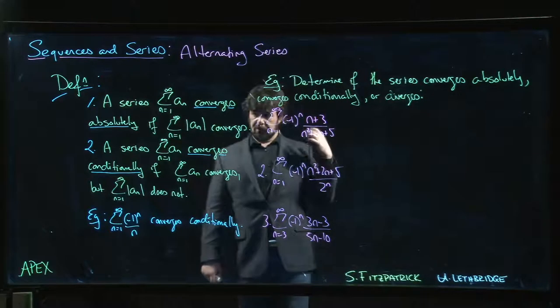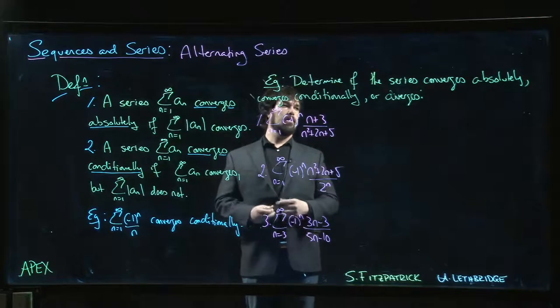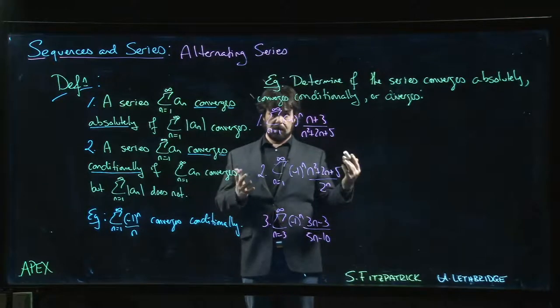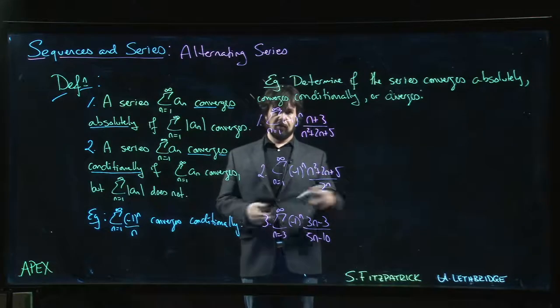Alright, so here are three examples of alternating series and we want to decide if they converge absolutely, only conditionally, or perhaps not at all.